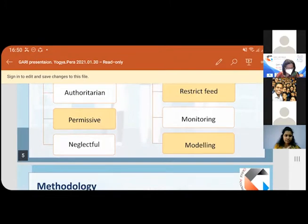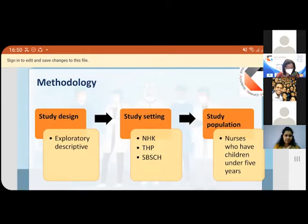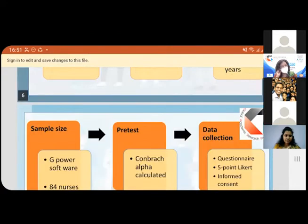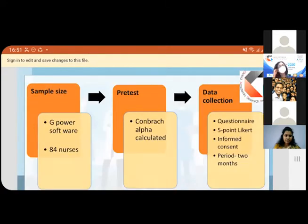I would like to move on to methodology. My study was an explorative descriptive cross-sectional study. Nurses who have children under five years old participated from National Hospital Kandy, Teaching Hospital Peradeniya, and Sirimavo Bandaranaike Specialized Children's Hospital Peradeniya. The total number of participants was 84. I calculated my sample size using G*Power software. Before distribution of the questionnaire, I performed a pre-test to calculate Cronbach's alpha, which was 0.7 and acceptable for the study.